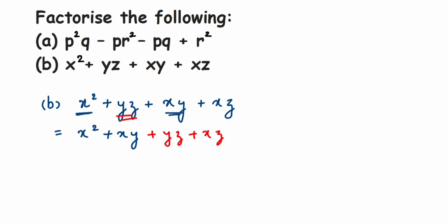From the first group, x squared plus x y, I can take x as common. x squared means x into x, and x y has one x. Taking one x outside, I'm left with x from the first term, and y from the second term. So I get x times (x plus y).